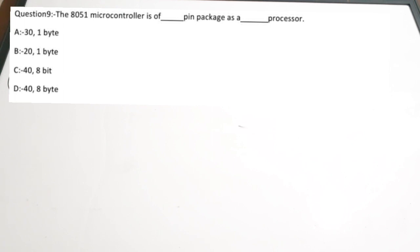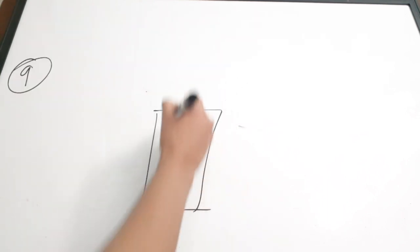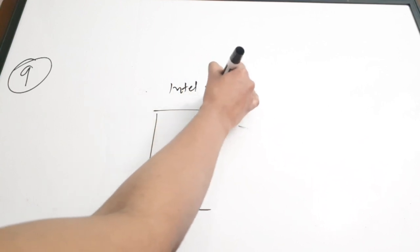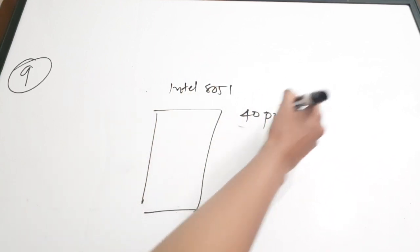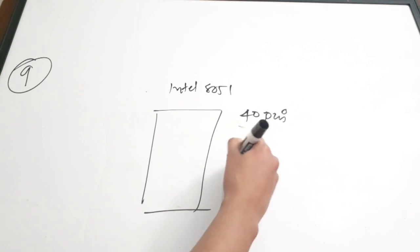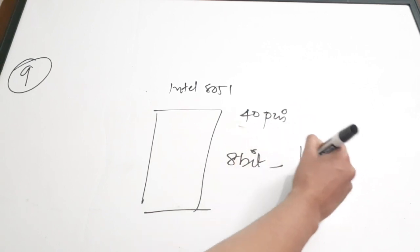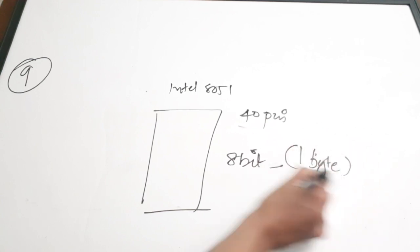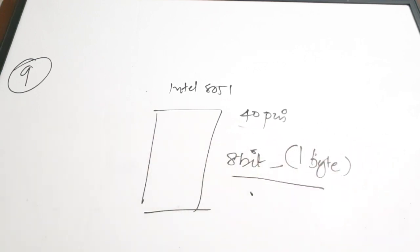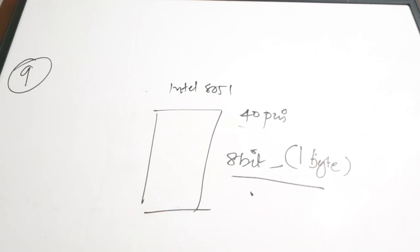Ninth question: the 8051 microcontroller is of dash pin package and is a dash processor. The Intel 8051 is a 40-pin IC and it is an 8-bit processor, meaning it has a bus size of 8 bits or one byte. Correct answer is option C.